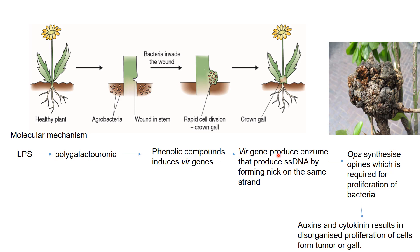The vir genes produce enzymes that create a nick on the T-DNA strand, producing single-stranded DNA. This single-stranded DNA is then carried into the plant cells.